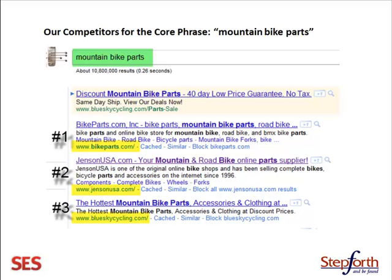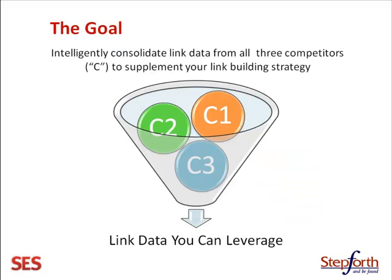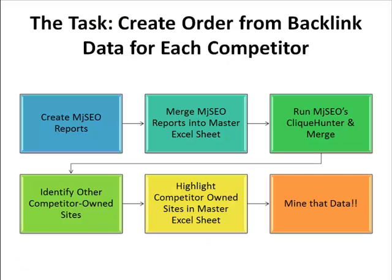The goal here is to take all the data we're going to compile and put it all into one file that you can use at the end for your link building. We're going to create a Majestic SEO report, merge it into a single Excel sheet, run ClickHunter to find hub sites, merge that data in, then use Domain Tools to identify other competitor-owned sites, integrate those into the Excel sheet as well, and then mine that data.